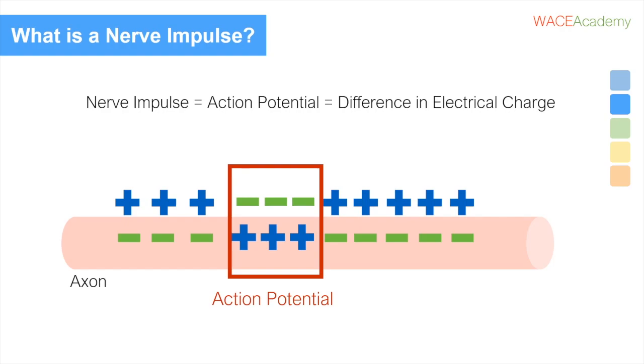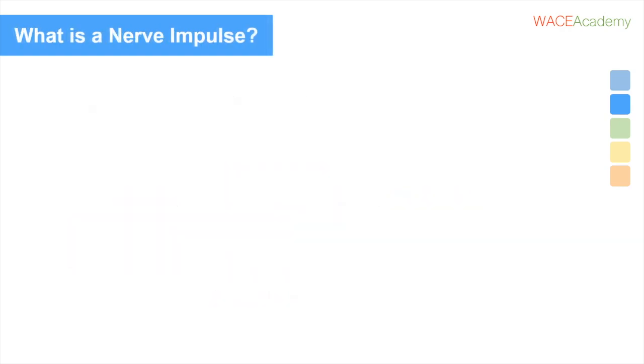Your neurons can pump charged ions in and out of themselves to change the charge difference, so they are using electrochemistry to send signals throughout your body.